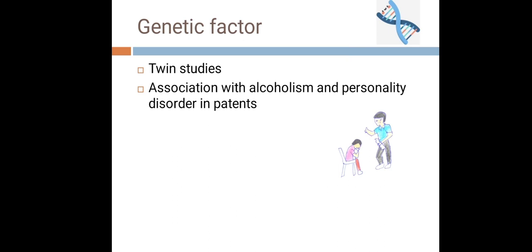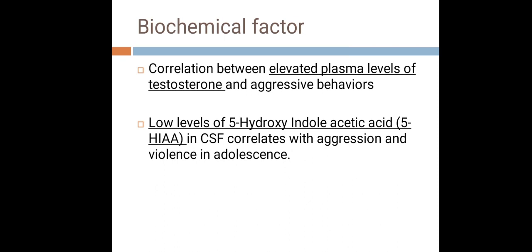Biochemical factors are also implicated, as aggression is a key feature of conduct disorder. Studies have found a correlation between elevated plasma levels of testosterone and aggressive behavior. Additionally, low levels of 5-hydroxyindoleacetic acid (5-HIAA) in CSF have been strongly correlated with aggression and violence in adolescents.